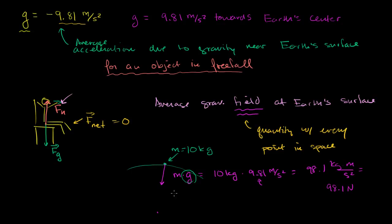g has given us the force per unit mass of gravity on an object near the surface of the Earth. So the average gravitational field is giving us force per mass. You give me a mass near Earth's surface — whether it's an object in free fall or not — you multiply that mass times g, because it's giving you force per mass, and it will give you the force of gravity acting on that object near the surface of the Earth, whether or not it's in free fall. I just want to make this little distinction.